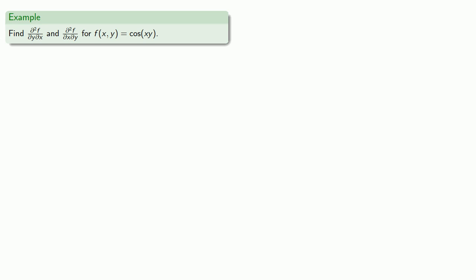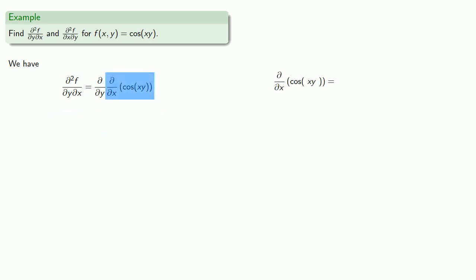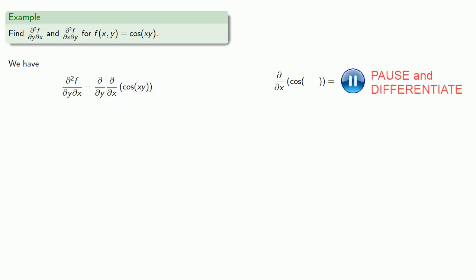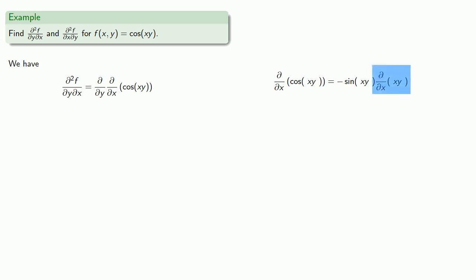So let's find some mixed partial derivatives. This notation says we're going to differentiate with respect to x first, and then with respect to y. Differentiating our function with respect to x, we treat y as a constant. This is really the derivative of cosine, so the chain rule applies — that's minus sine times the derivative of the argument. We need to find the derivative of this product, so we'll apply the product rule.